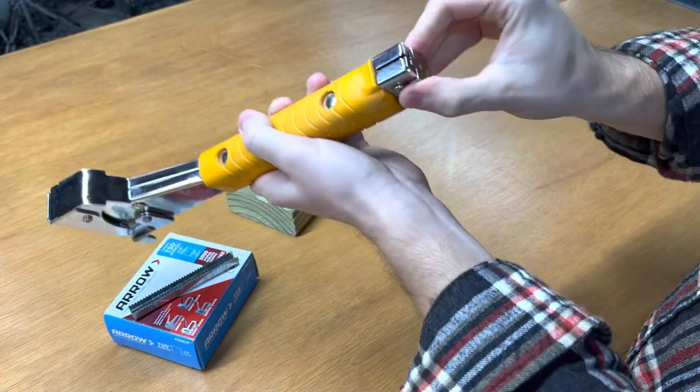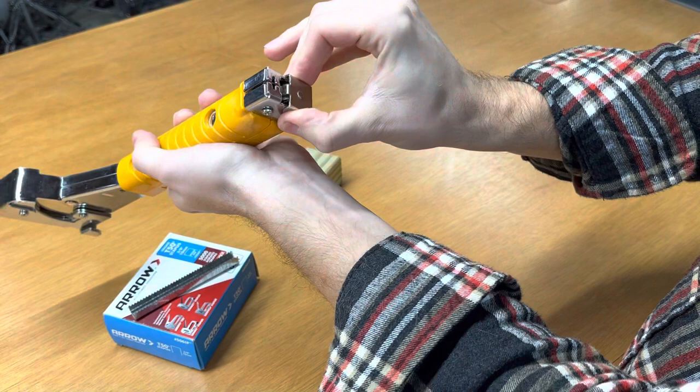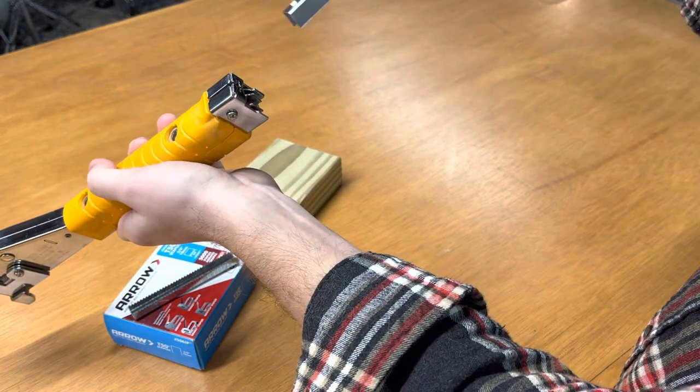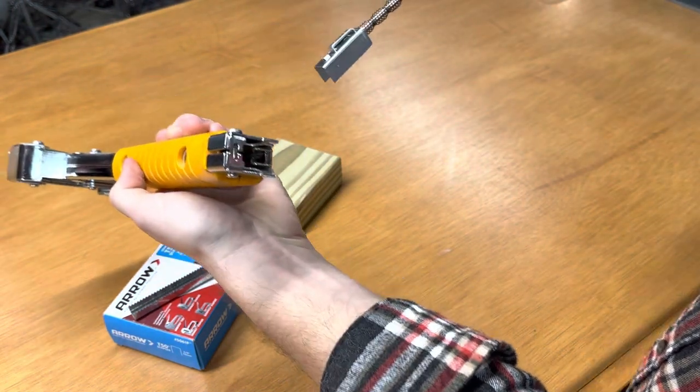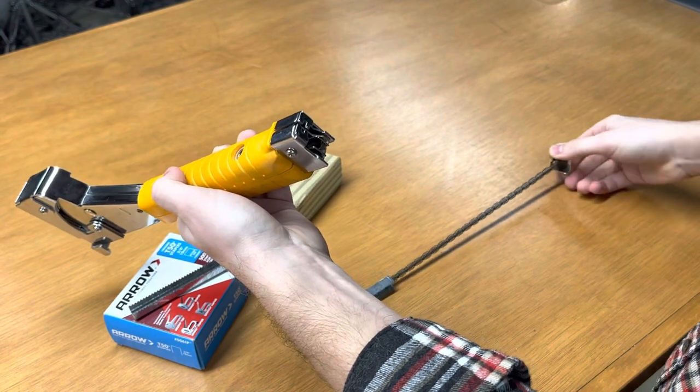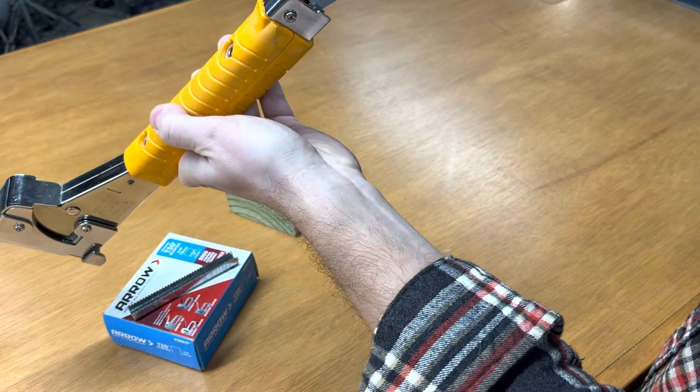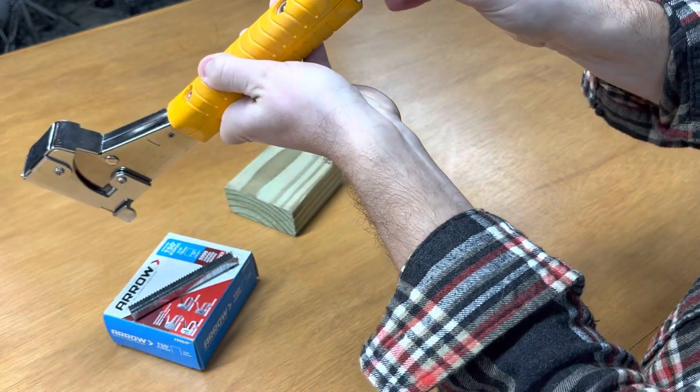The staples get loaded in the back here. This kind of presses in and goes down, and then you've got this long spring so you can load a ton of staples in here. Then that just slides back in there.